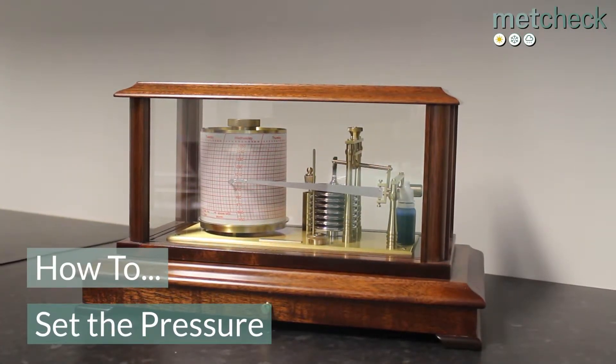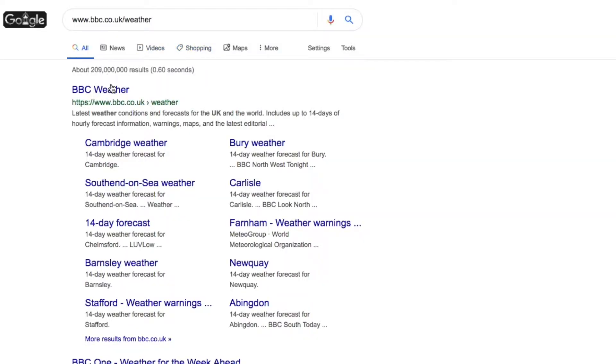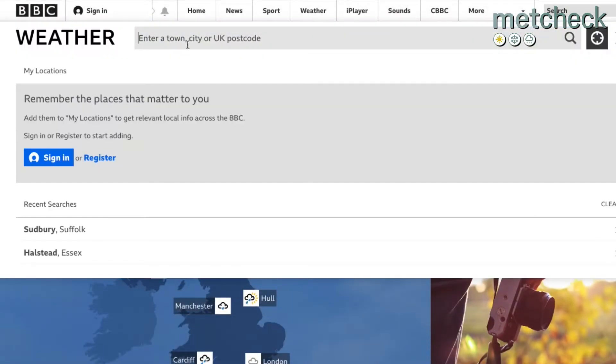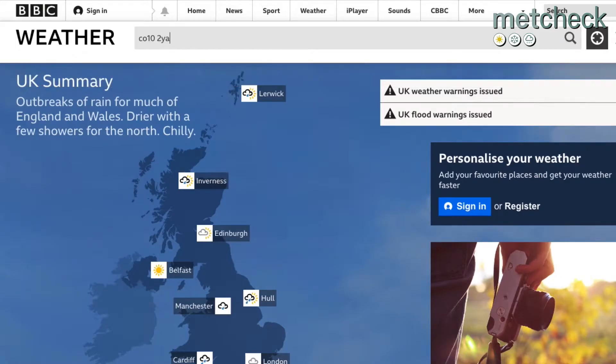Firstly, you will need to find your local pressure reading by visiting www.bbc.co.uk/weather and entering your postcode in the top left hand corner.